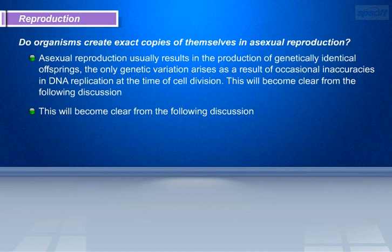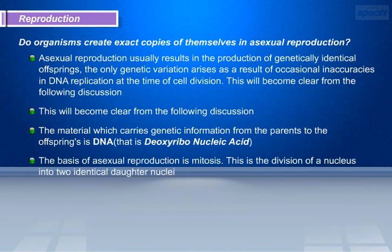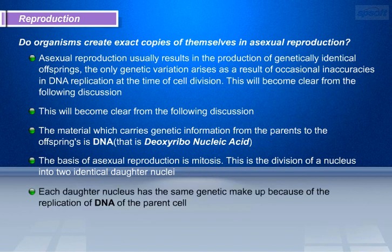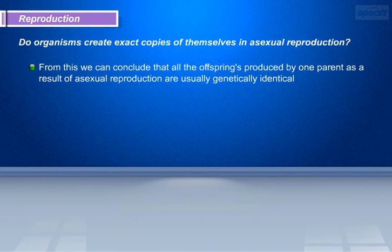The material which carries genetic information from parents to offspring is DNA. The basis of asexual reproduction is mitosis — the division of a nucleus into two identical daughter nuclei. Each daughter nucleus has the same genetic makeup because of the replication of DNA of the parent cell. After division of the nucleus, the rest of the parent cell divides to form two genetically identical daughter cells, which then form two offspring. From this, we can conclude that all offspring produced by one parent through asexual reproduction are usually genetically identical.